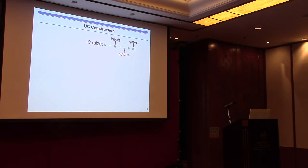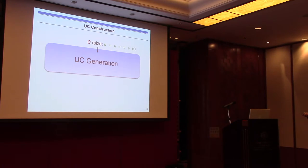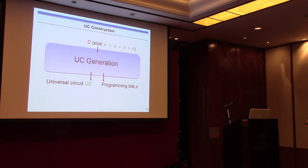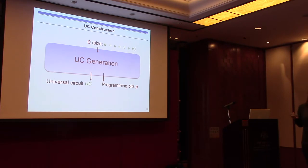What do we expect from a universal circuit construction in general? For an input circuit C of size N — the sum of its inputs, outputs, and gates — it gives us two things: first, the universal circuit itself, which can be generated by anyone and depends only on the size of the circuit; and second, the programming bits, which depend on the specific input circuit.